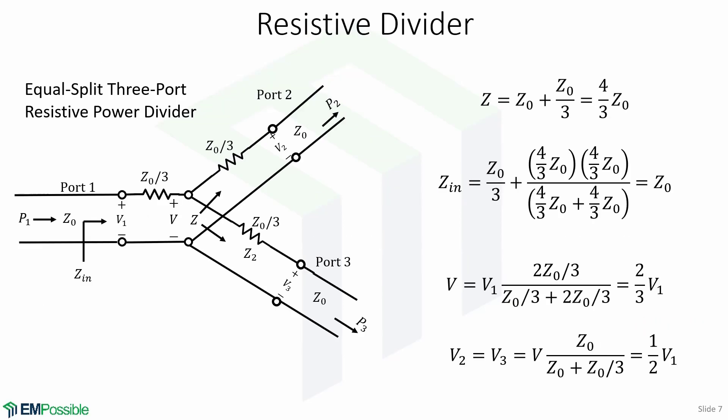If a 3-port divider contains lossy components, it can be made to be matched at all ports. The circuit for such a divider is shown in this picture, which is an equal split 3-port resistive power divider.